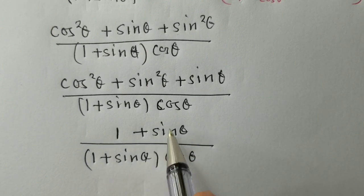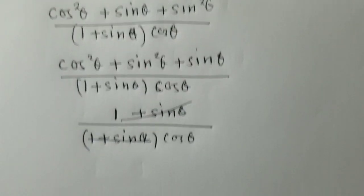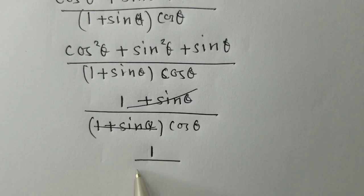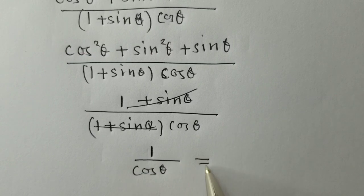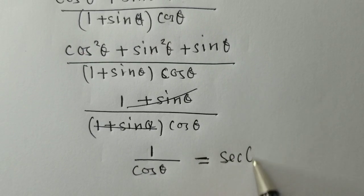If you can see, all this top part will cancel with this denominator. And we're going to remain with 1 over cos theta. 1 over cos theta, we said it's equal to what? We said it's equal to sec theta.